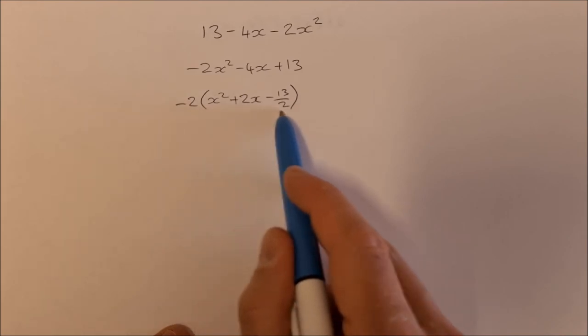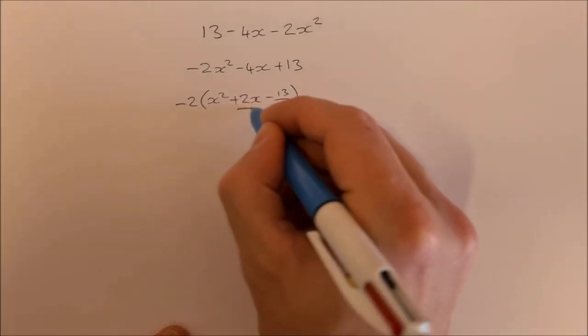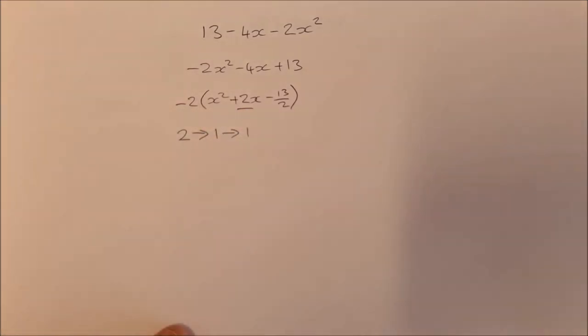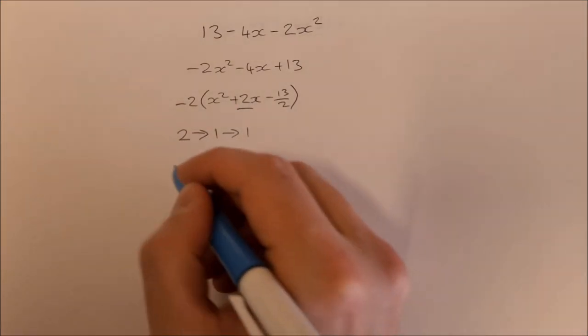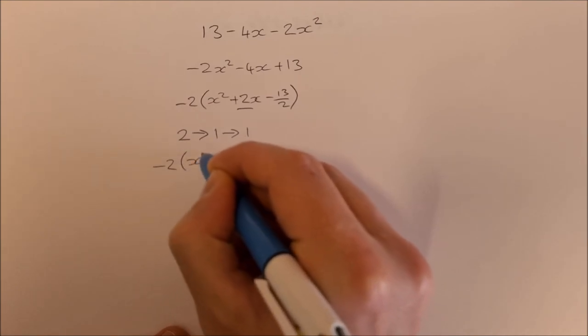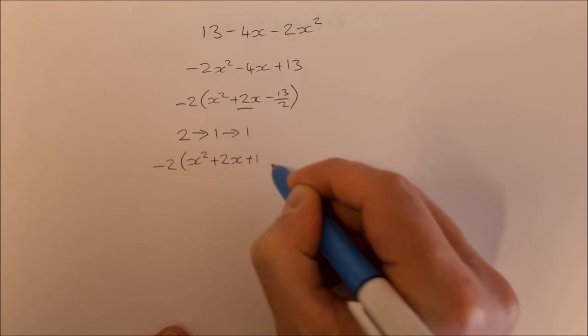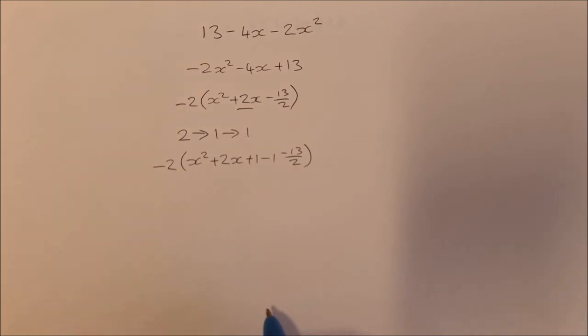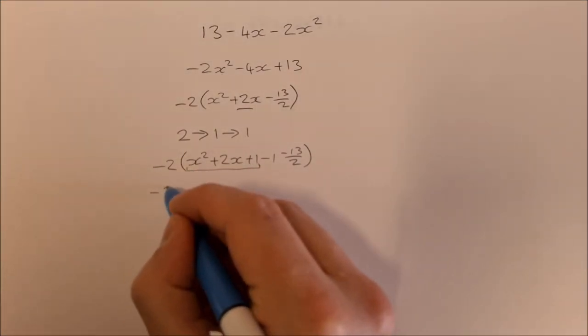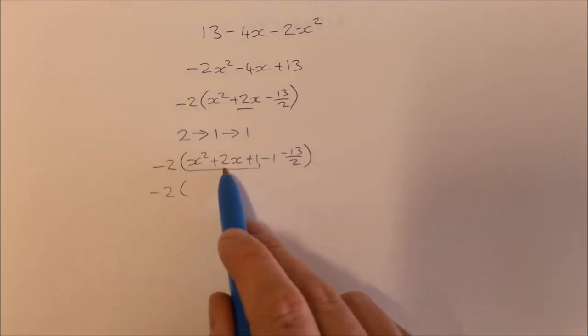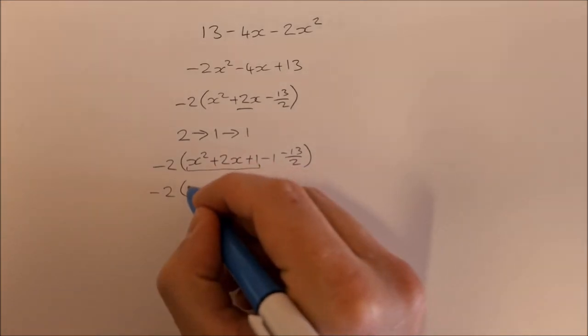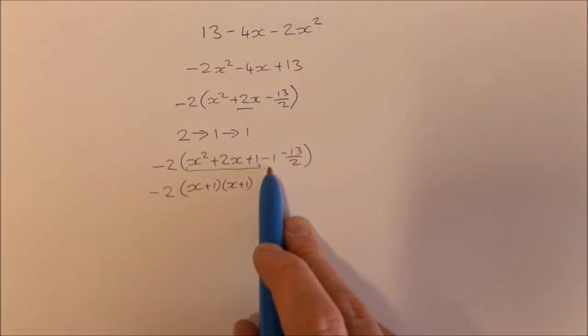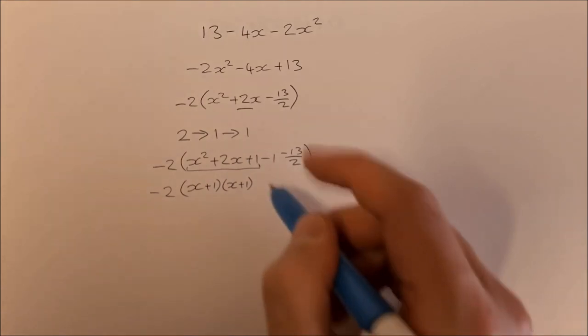We're going to complete the square on this part here. Let's take our coefficient of x, that's 2. We half it to get 1 and we square 1 to get 1 again. So we're going to add and subtract 1: -2(x² + 2x + 1 - 1 - 13/2). We can factorize this bit here. Factors of 1 that add together to give you 2 are 1 and 1. So I have (x + 1)(x + 1), and then -1 - 13/2, that's -15/2.